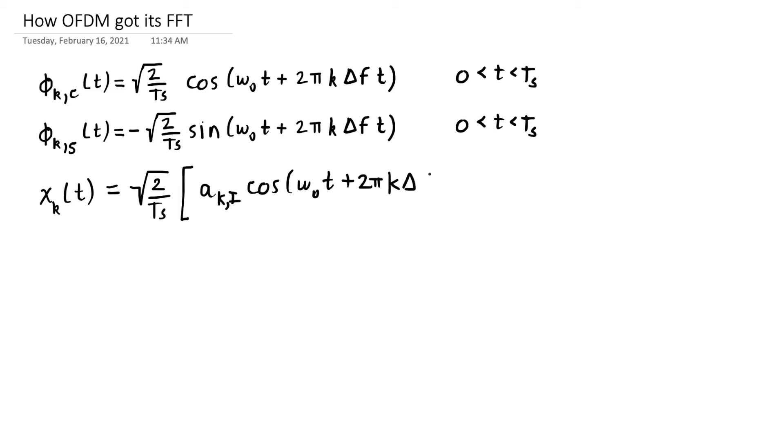It's going to be some amplitude multiplied by the cosine and some amplitude multiplied by the sine. We're going to have the square root of two over T_S brought out front multiplied by some amplitude. I'm going to call it a_(k,i) times a cosine at the kth carrier frequency plus an amplitude k comma q for the quadrature multiplied by the sine at that same frequency.